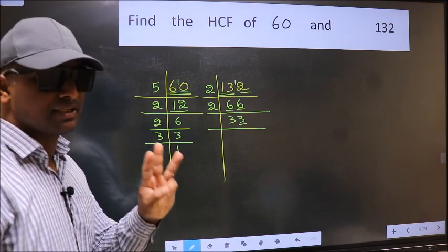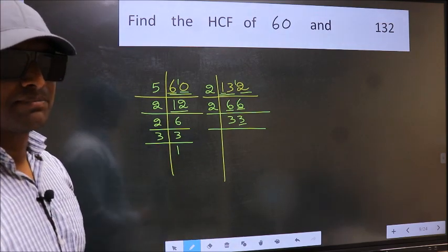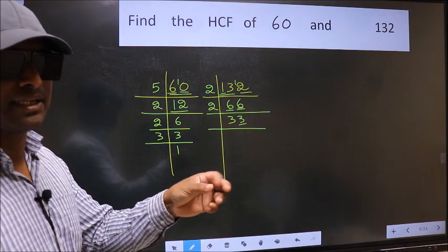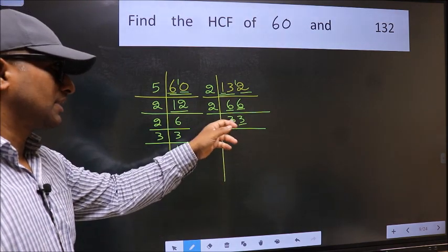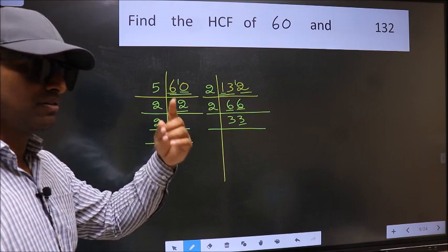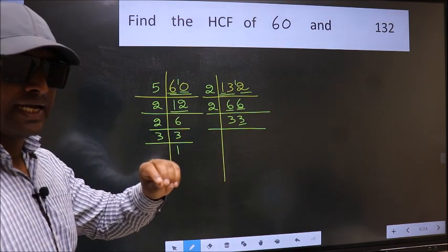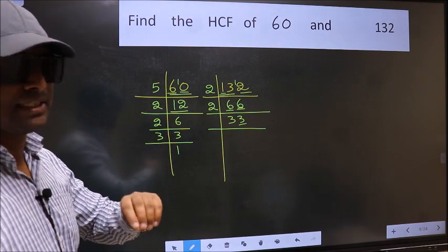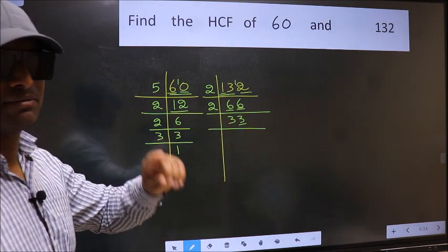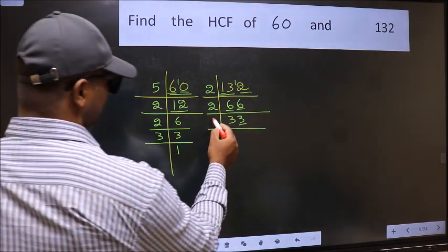Next prime number 3. To check divisibility by 3, we should add the digits. 3 plus 3, we get 6. And 6 is divisible by 3. So this number is also divisible by 3. So take 3.